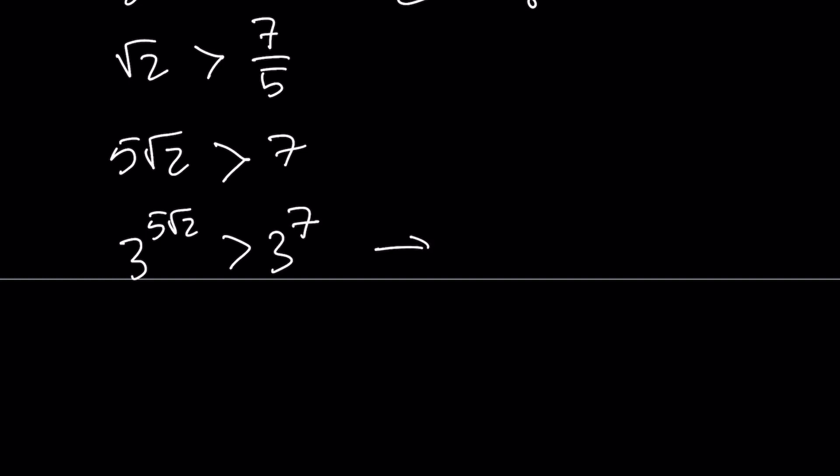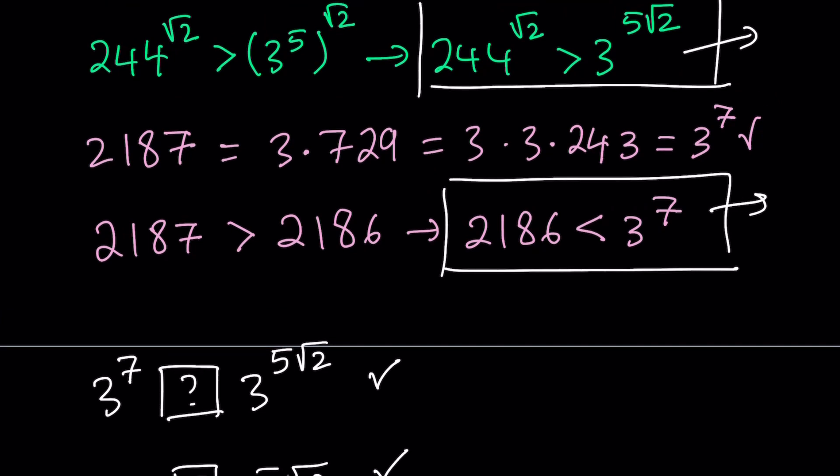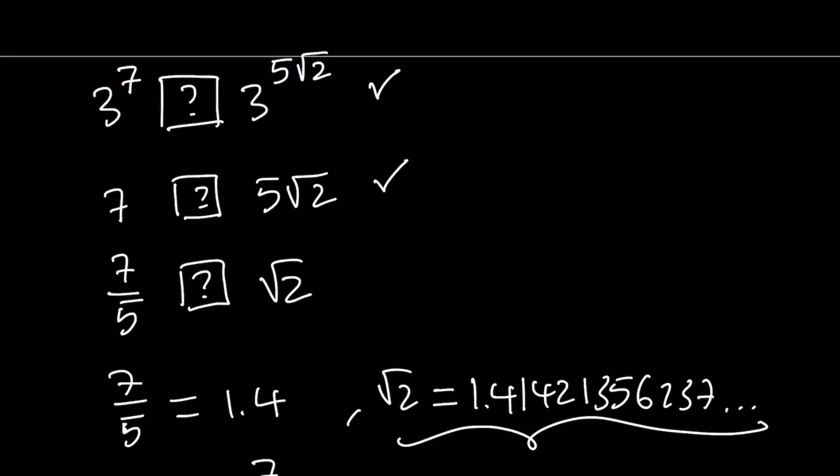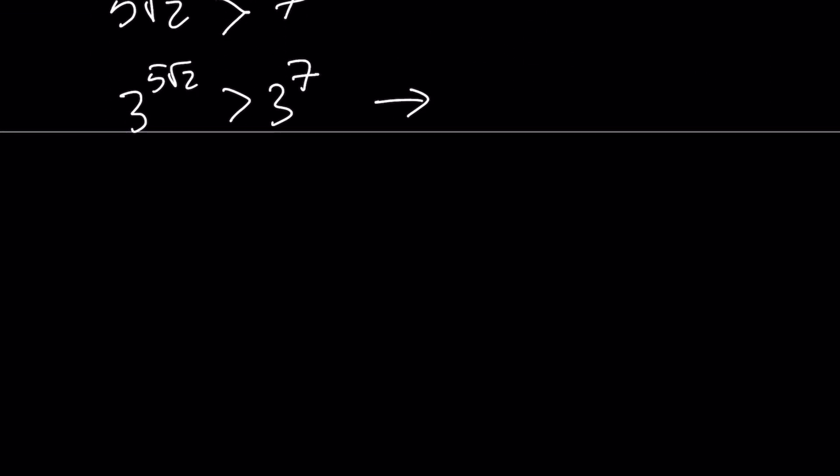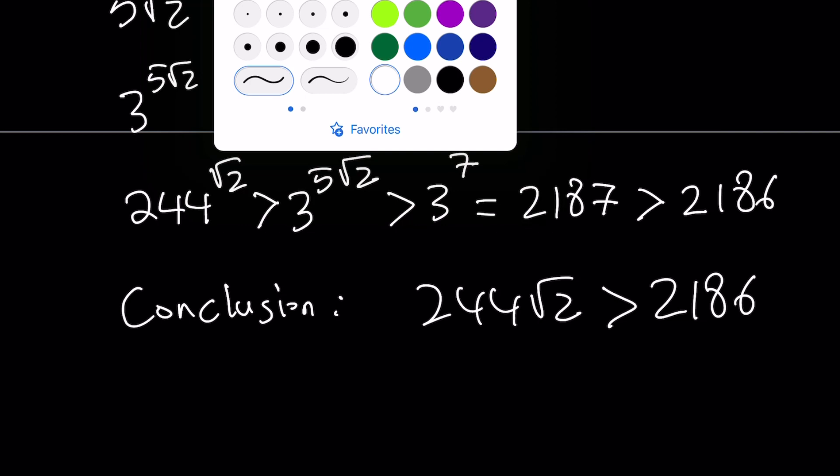This implies what? Let's take a look at how this applies to our problem. Remember, we were trying to connect these two inequalities. We do know that 244 to the power of square root of 2 is greater than 3 to the power of 5 root 2 because we just compared 244 and 243. And 3 to the power of 5 root 2 is greater than 3 to the power of 7, which is equal to 2,187. And that number is greater than 2,186. Conclusion. This implies 244 root 2 is greater than 2,186.